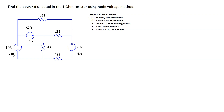Step one in the node voltage method is to identify essential nodes. Recall that an essential node is a point where three or more circuit elements join. In this circuit, this point is an essential node because three circuit elements are joining. This is an essential node, and we have two more essential nodes here, so there are four essential nodes in total.